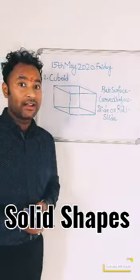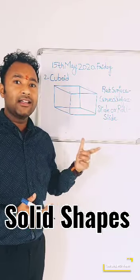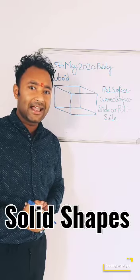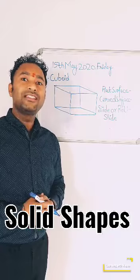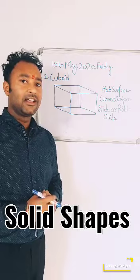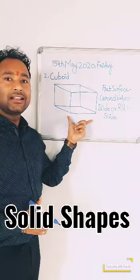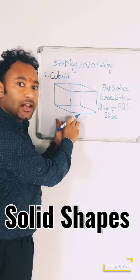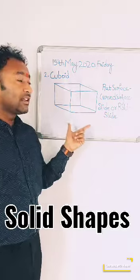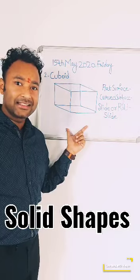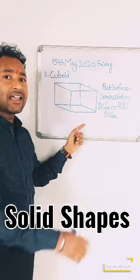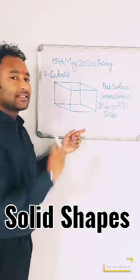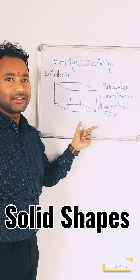The next shape is cuboid. Cuboid comes from the plane shape rectangle — a rectangle has length and breadth that are different. Similarly, a cuboid has different length and different breadth, and since it is a solid figure, it also includes height. How many flat surfaces are there in a cuboid? Count: 1, 2, 3, 4, 5, 6 — there are 6 flat surfaces.